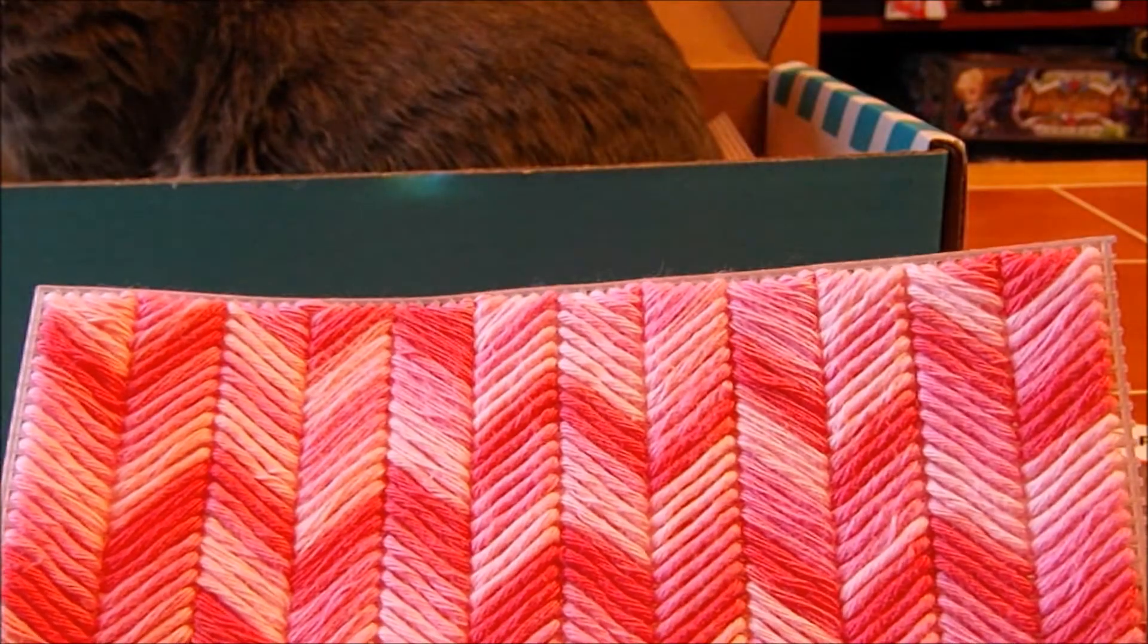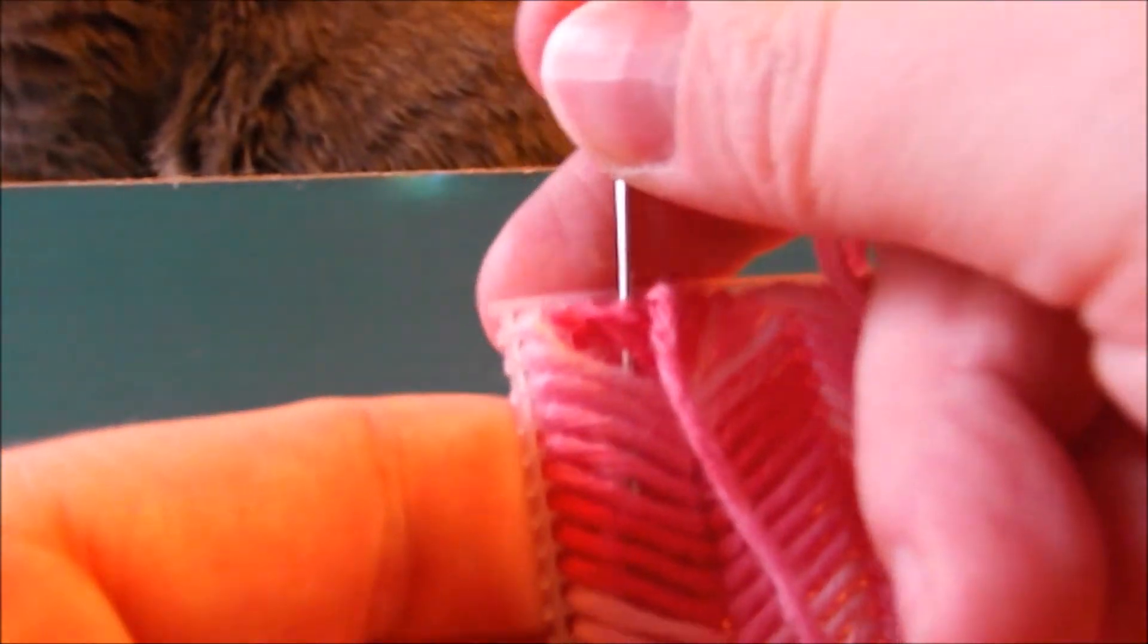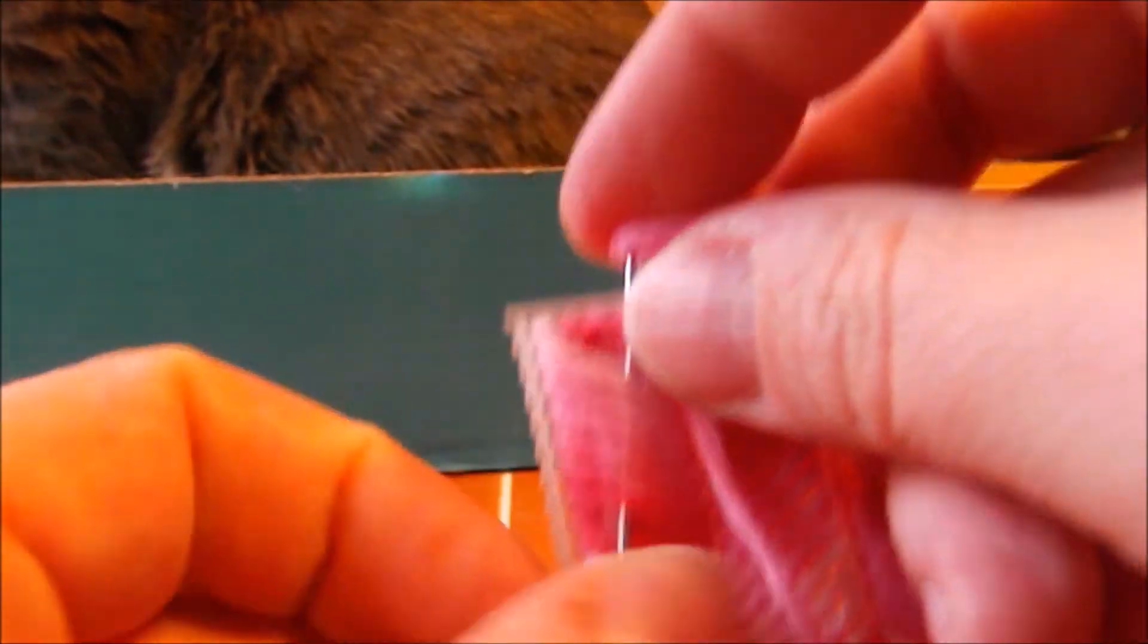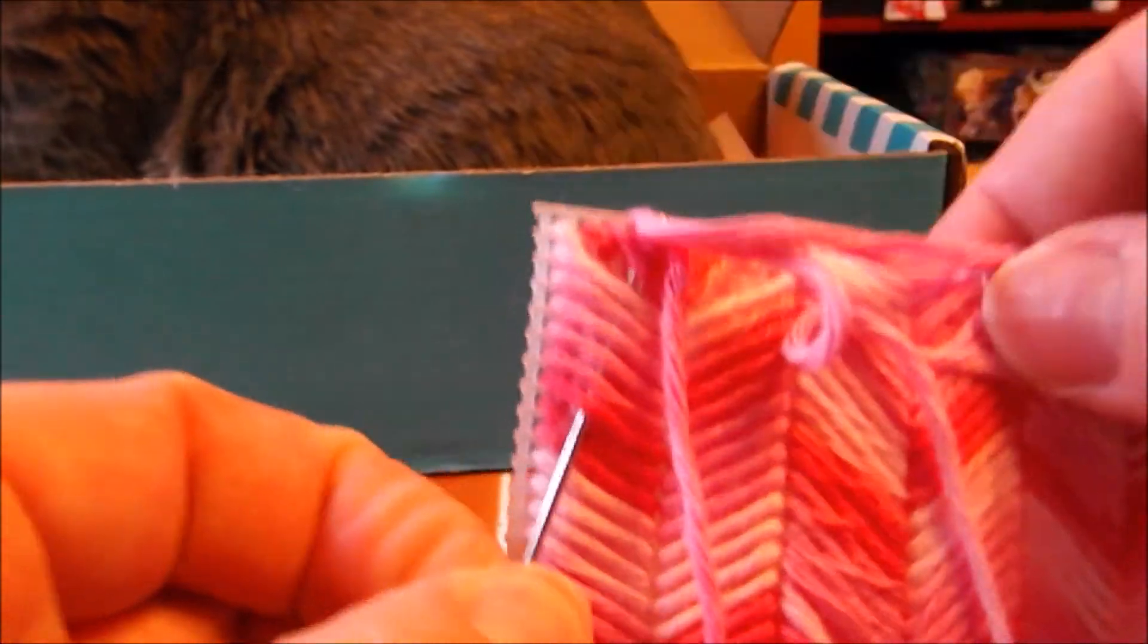When you've finished your first edge, go ahead and flip it over. And then just going to tuck the yarn under some of the loops on the back.